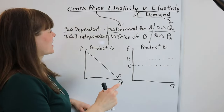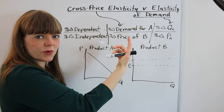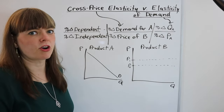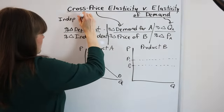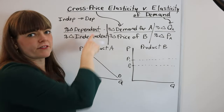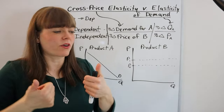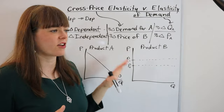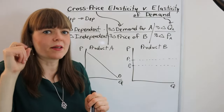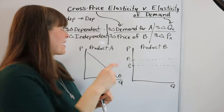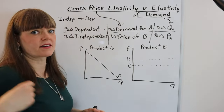All elasticities in economics are a measure of percent change in the dependent variable over percent change in the independent variable, where these two things have a causal relationship — the independent variable causes the dependent variable to change. Elasticity measures the direction, whether it's positive or negative, and the magnitude, meaning how responsive the dependent variable is to the independent variable.